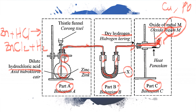Bring a burning wooden splinter and put it into the mouth of the test tube. If a pop sound is heard, it means there is air in the combustion tube, so you repeat the process — let hydrogen gas flow in, collect a sample, and test with the burning wooden splinter — until no pop sound is heard, which means there is no air in the combustion tube.